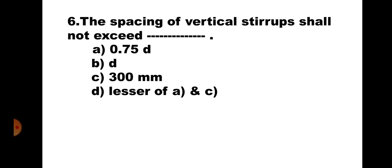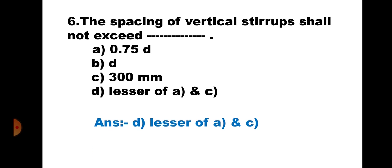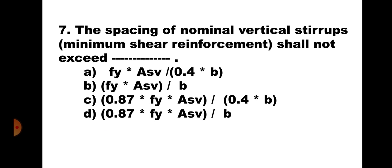Question 6. The spacing of vertical stirrups shall not exceed: A. 0.75D, B. D, C. 300 mm, and D. Lesser of A and C. According to IS-456, the spacing of vertical stirrups shall not exceed 0.75D or 300 mm, whichever is less. Hence, the correct answer is D. Lesser of A and C.